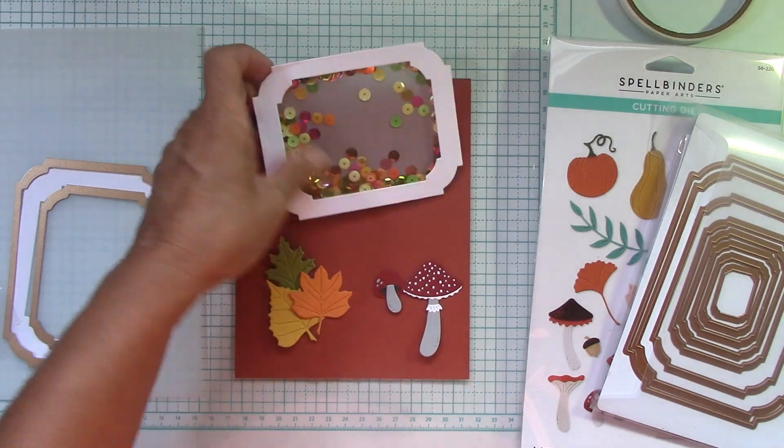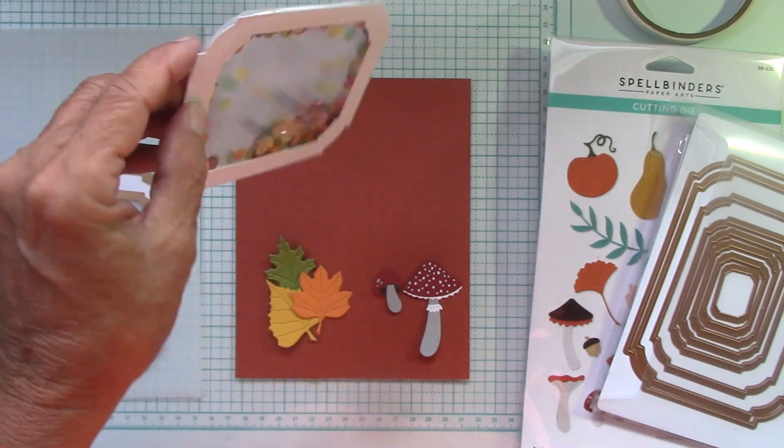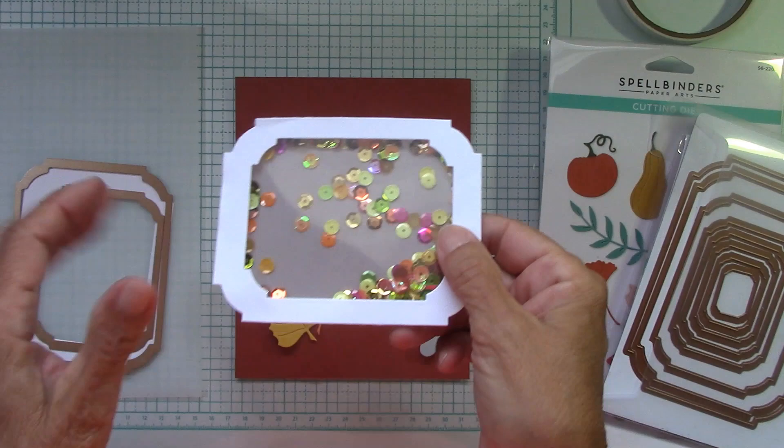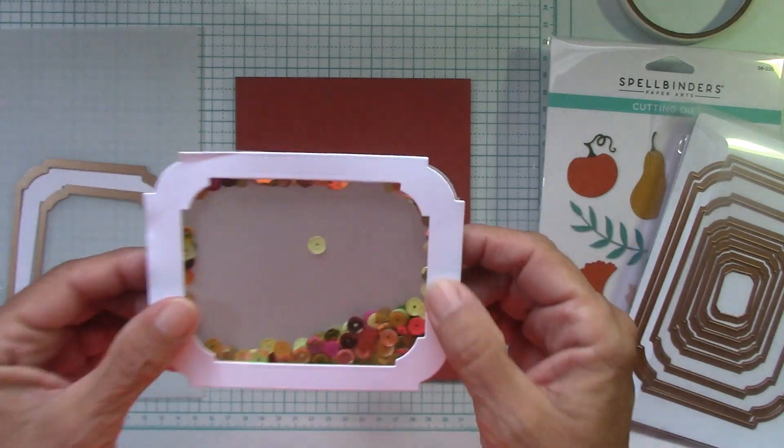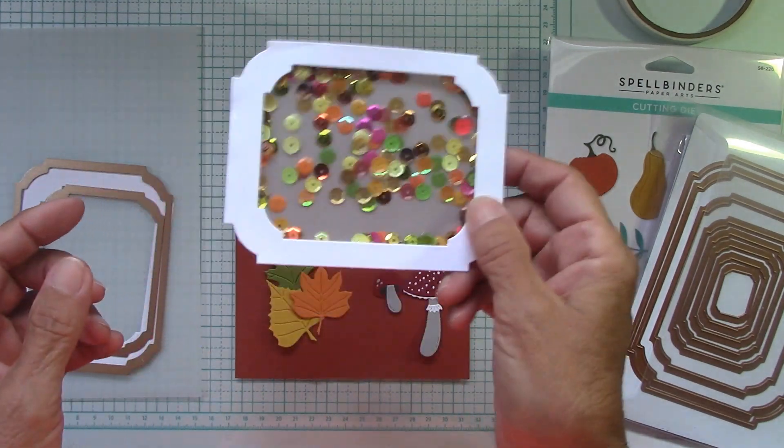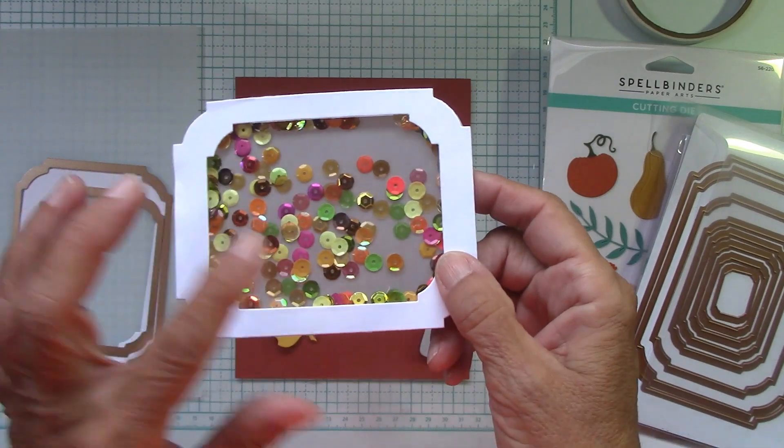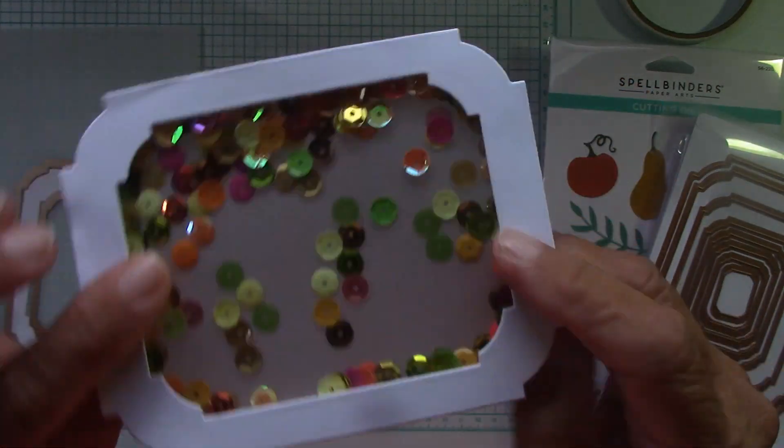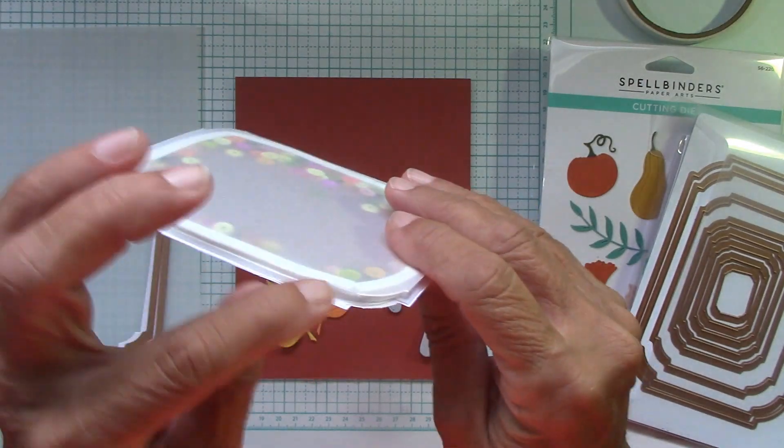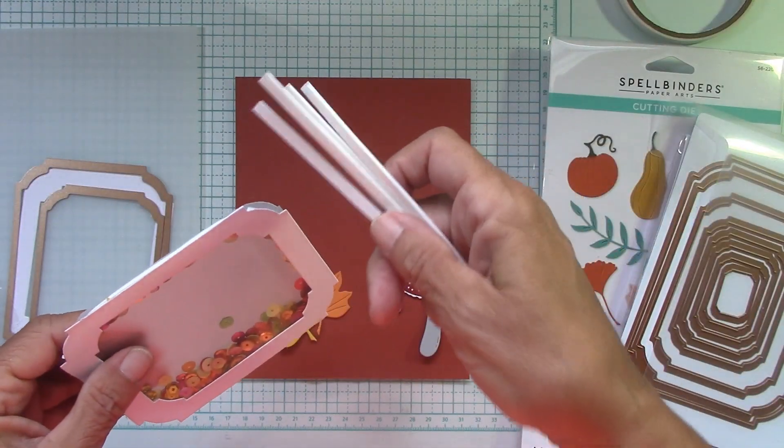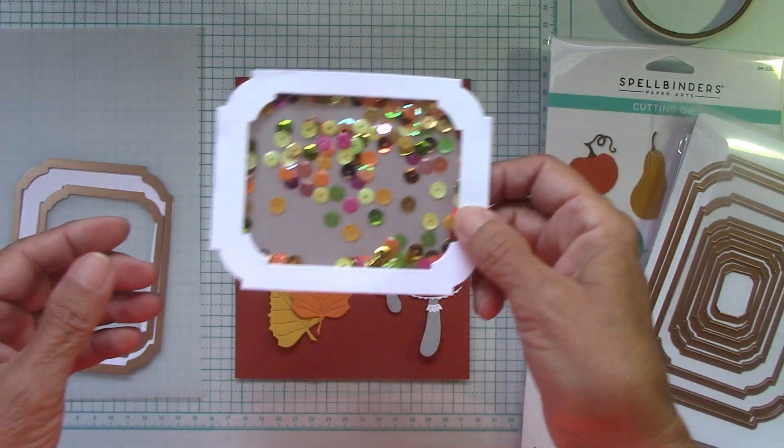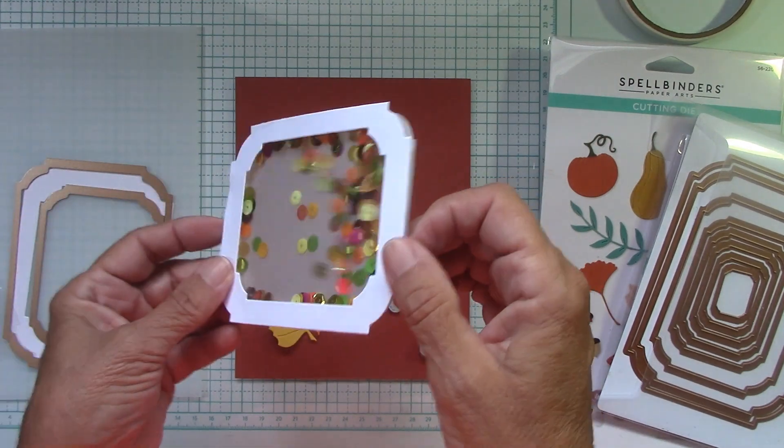I learned how to make a very easy shaker card. I've always shied away from them because I've had trouble with the shaker part. To back it with vellum was such a fantastic idea. I just made this yesterday to see how I would do. I would put more sequins in it. You can always put two runs of foam tape around it and then pop it up even more. Her video was fantastic about that.